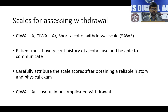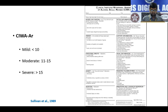There are various scales used for assessing withdrawal. We will share the CIWA-Ar with you — Professor Prabhat has already shared it. A score of less than 10 on the CIWA-Ar constitutes mild withdrawal, 11 to 15 constitutes moderate withdrawal, and more than 15 constitutes severe withdrawal.